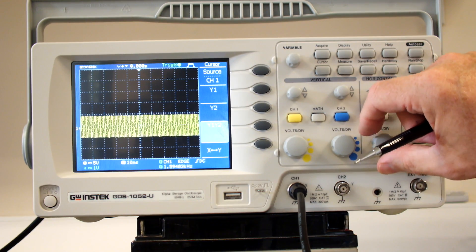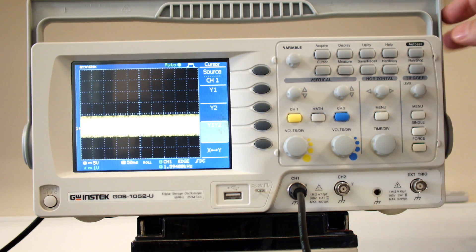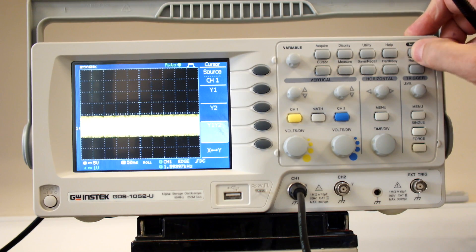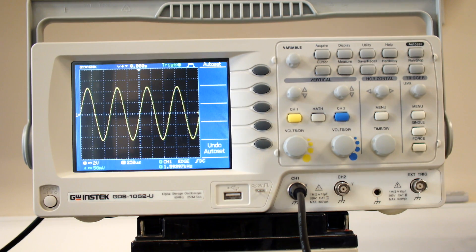Sometimes when we switch on, we might have some strange waveforms like this and we're not quite sure what's going on. There's something provided called Auto Set. If you press Auto Set, it will look for the waveform and display it in the most convenient form.